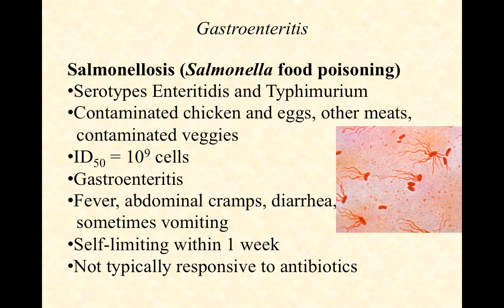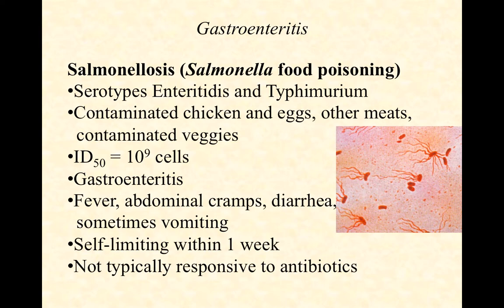Salmonella gastroenteritis — the food poisoning — is caused by Salmonella enterotitis or Salmonella typhimurium. Note that typhimurium does not cause typhoid fever in humans; 'murium' refers to mouse, so it causes typhoid fever in mice but gastroenteritis in us. Contaminated chicken, eggs, other meats, and vegetables are common sources. The ID50 value is high — around a billion cells, similar to ETEC-type E. coli. Symptoms include fever, abdominal cramps, diarrhea, and sometimes vomiting. It's self-limiting within a week and not typically responsive to antibiotics, either because treatment comes too late, the immune system is already winning, or the bacteria don't respond well.